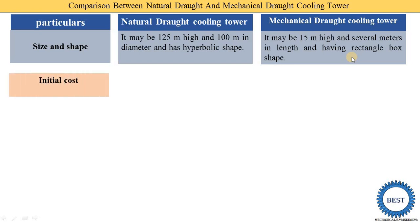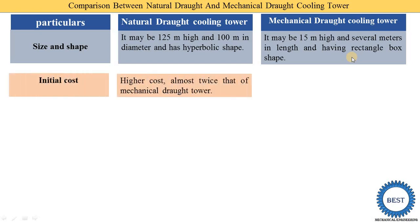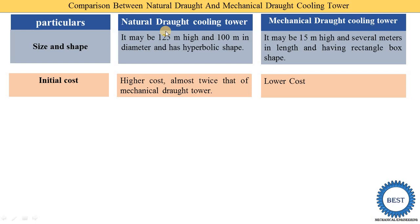The natural draft cooling tower is taller than the mechanical draft tower. Because the height is more in a natural draft, more cost is required during its construction. In a mechanical draft, the initial cost is lower compared to the natural draft cooling tower.